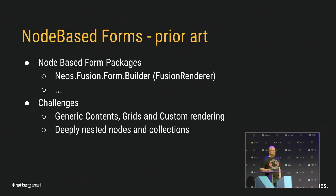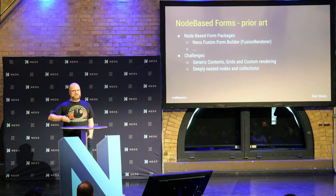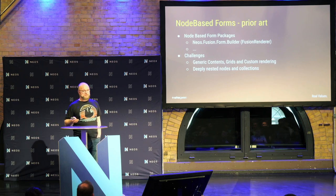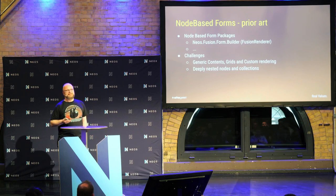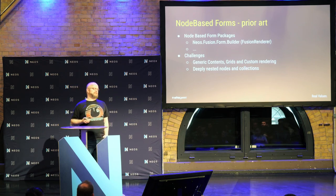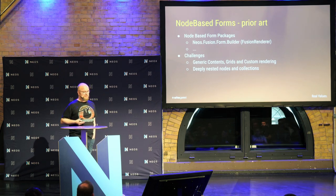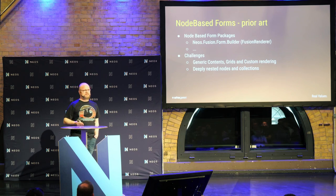Most of them had some things in common which I personally do not like. It was quite difficult to use generic contents from Neos inside of a form — just add an image here or a text there. And it was difficult to use grids inside of forms — it always required some engineering. Custom rendering has always been cumbersome. Also, the node structures used by Neos Fusion form and all the other experiments were quite deeply nested and created a really non-trivial structure in the node tree, so editors easily got confused. That is what I wanted to make better.